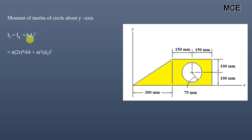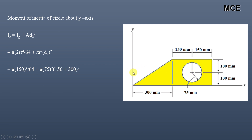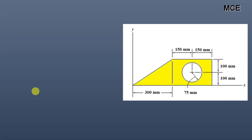The moment of inertia of this circle about its own centroidal axis parallel to the y-axis equals πd⁴/64. The diameter of the circle equals 2r, the area of the circle is πr², and the distance between the centroid of the circle and the y-axis is d2. The radius is 75 mm, so the diameter is 150 mm, and the distance between the centroid of the circle and the y-axis is 150 mm plus 300 mm. The moment of inertia of the circle about the y-axis is 3603.32 × 10⁶ mm⁴.